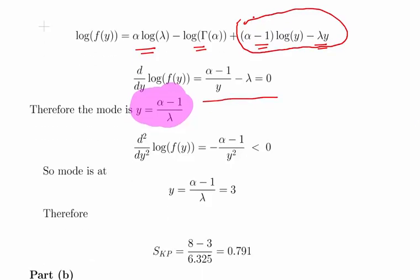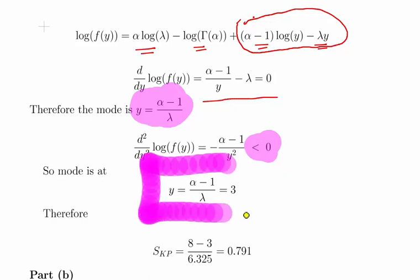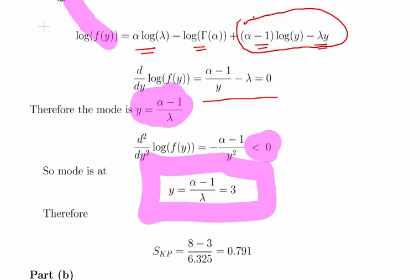We can verify this by checking the second derivative is negative, confirming it is a maximum. For our calculation, alpha equals 1.6, so the mode is 1.6 minus 1 over 0.2, which is 0.6 divided by 0.2, giving us 3. So our mean is 8, mode is 3, and standard deviation is 6.325. The skewness coefficient SKP is therefore 0.791.